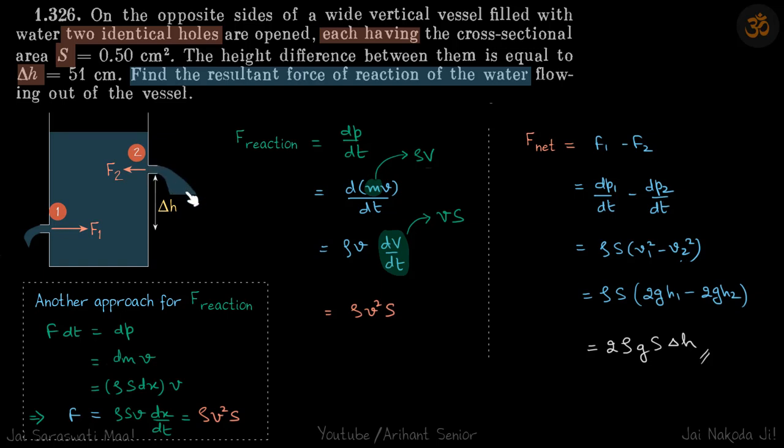This is the general term DP by DT for any liquid that is coming out with velocity V from area S. So F net equals F1 minus F2, equals DP1 by DT minus DP2 by DT. So DP1 by DT equals rho V1 square S, and DP2 by DT will be rho V2 square S. This becomes rho S into V1 square minus V2 square.